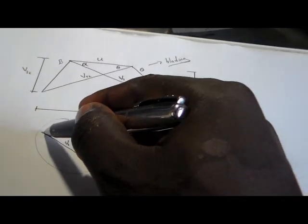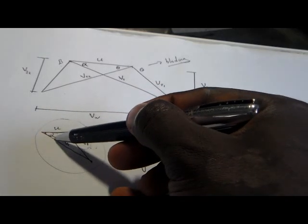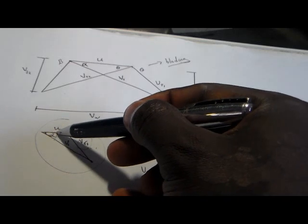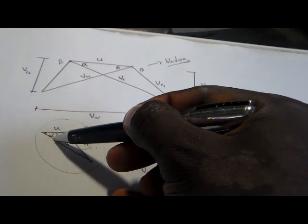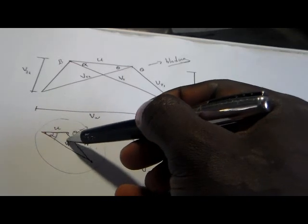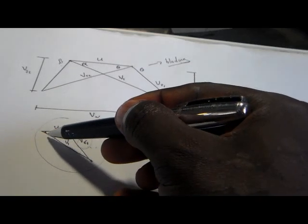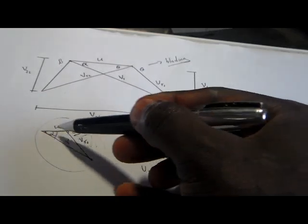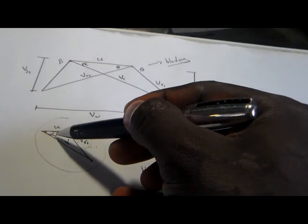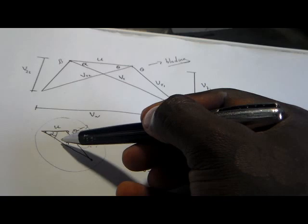On the right-hand side triangle, we have the inlet angle of the turbine, also called the nozzle angle. V1 is the inlet velocity on the turbine — sometimes they say it is the velocity that leaves the nozzle.